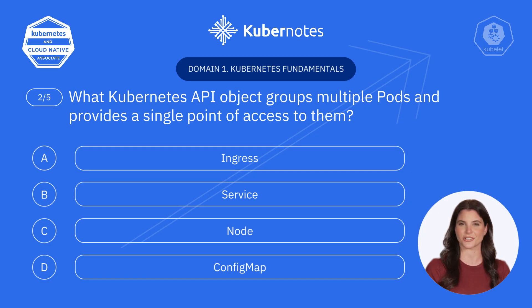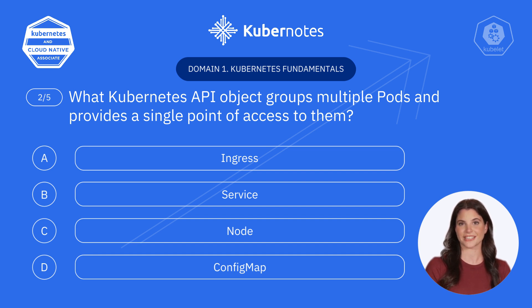Here comes question two. What Kubernetes API object groups multiple pods and provides a single point of access to them? A. Ingress. B. Service. C. Node. D. ConfigMap.